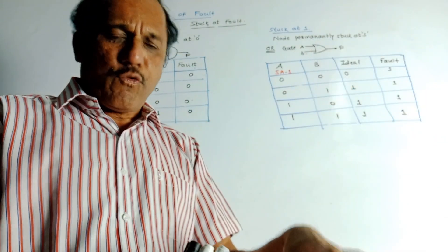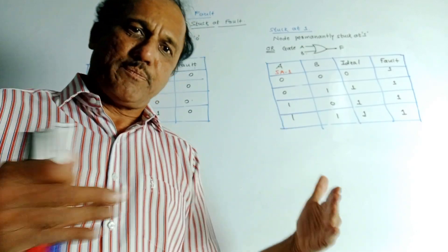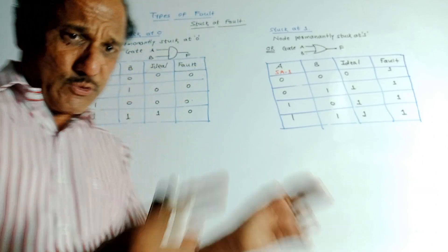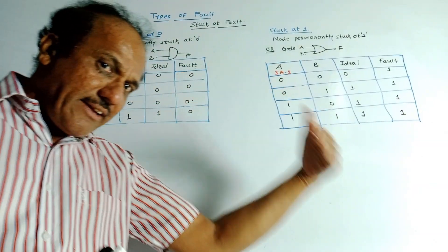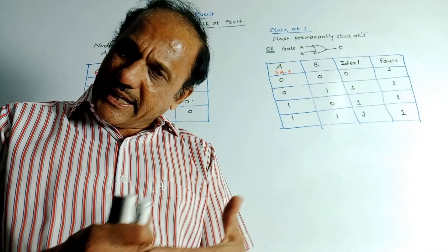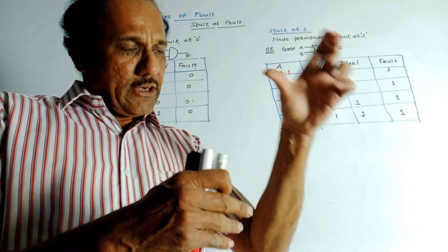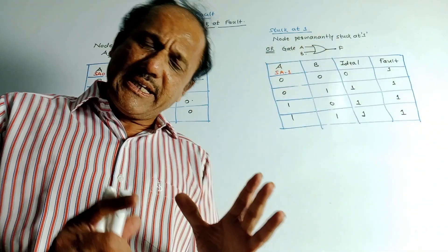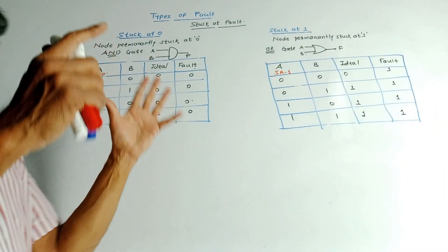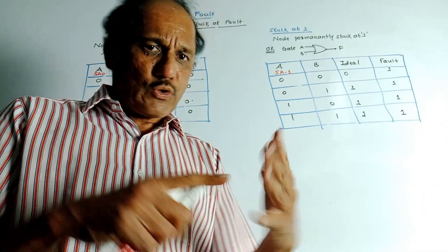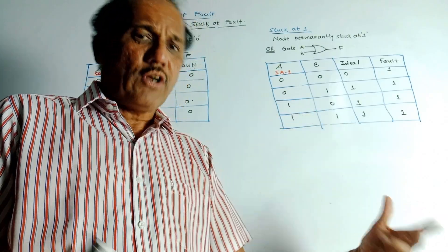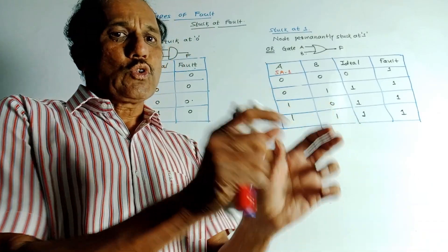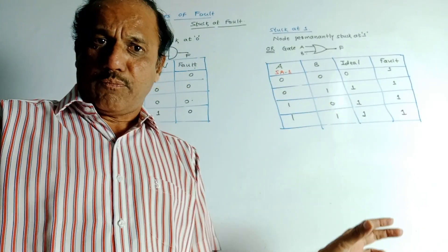The different types of faults will be asked along with an explanation of one or two types. As the name indicates, fault means you are getting a certain error in the output. This error may be developed during manufacturing of the circuit or during processing of the circuit. Broadly, there are two types of fault: one is the fault due to physical connection — that is a physical fault — and another is the fault or error at the output due to logical connection, that is the logical fault.